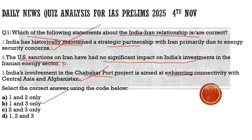By solving this question we understood what India's relationship with Iran is, how we historically maintained this strategic partnership, and what the bottlenecks are — primarily US sanctions, and how Iran retaliated to India's withdrawal with extreme comments on India's internal issues, leading to friction. With this understanding, let's move to the next question.